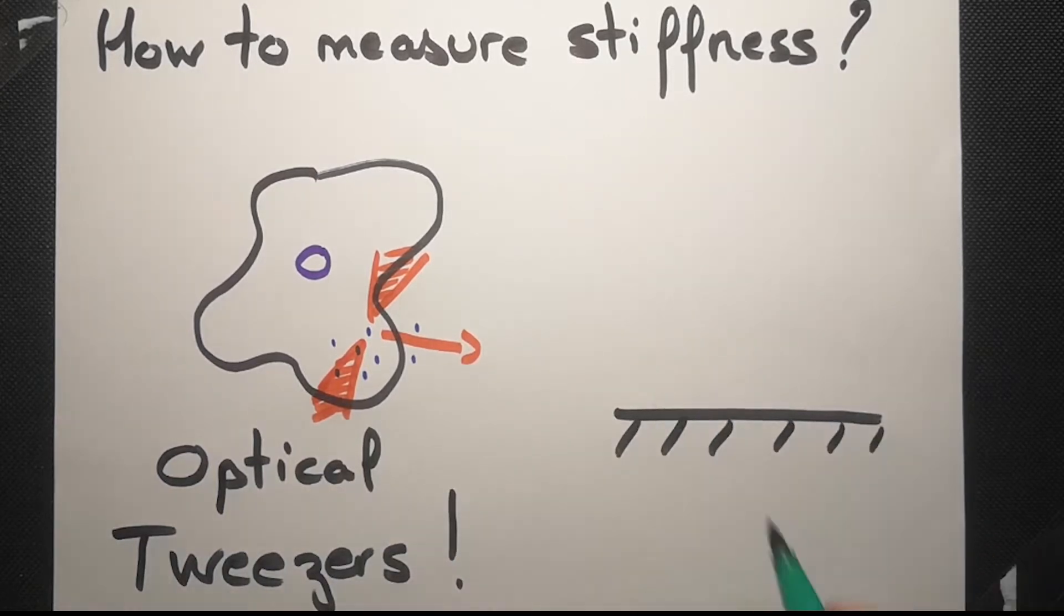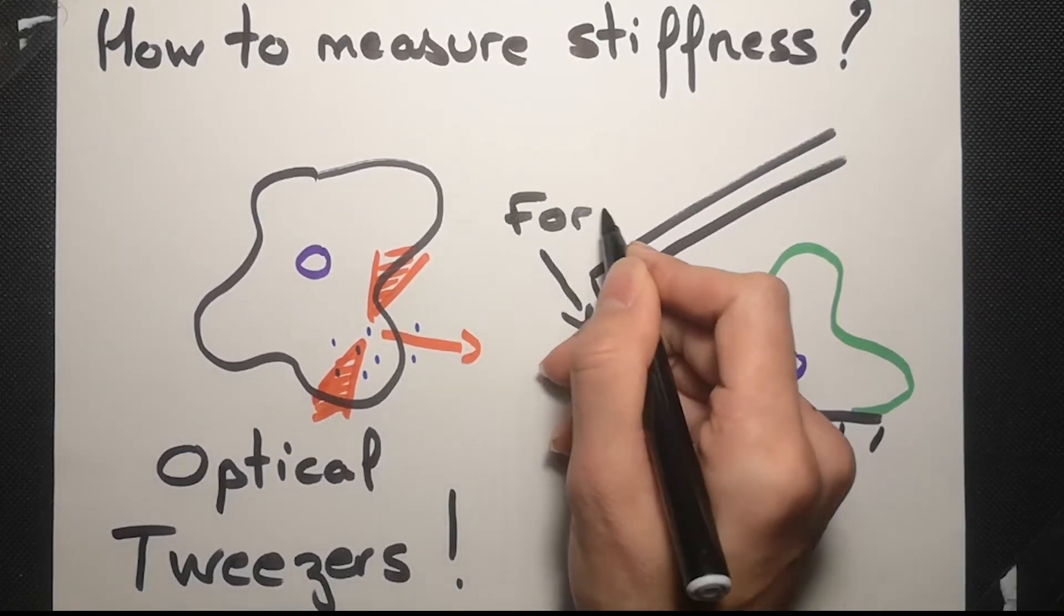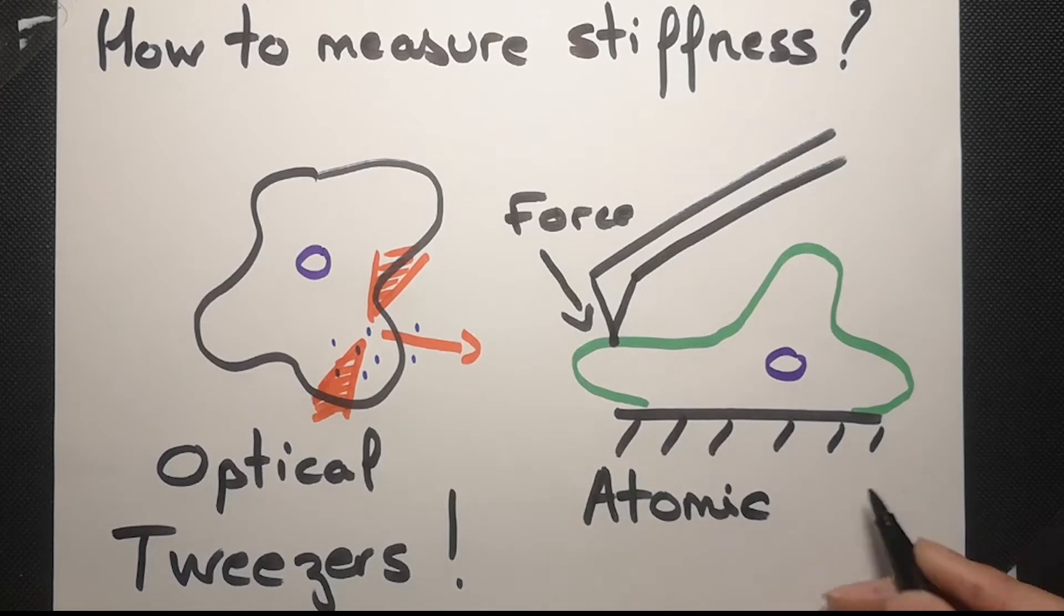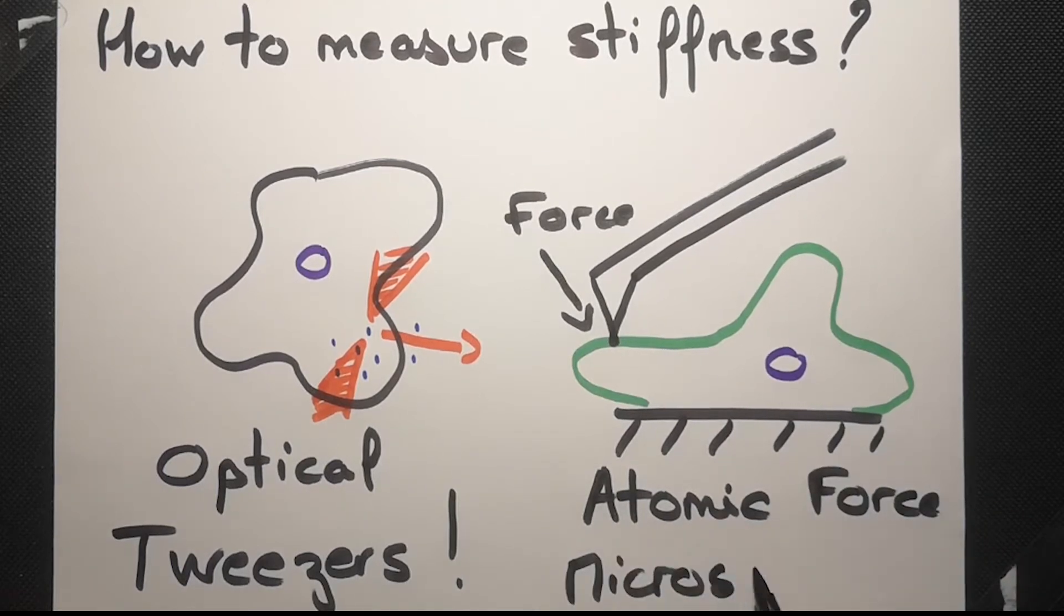We can also use, for example, atomic force microscopy, where we record the deformation of a cell to a given force. The higher the deformation, the softer the cell.